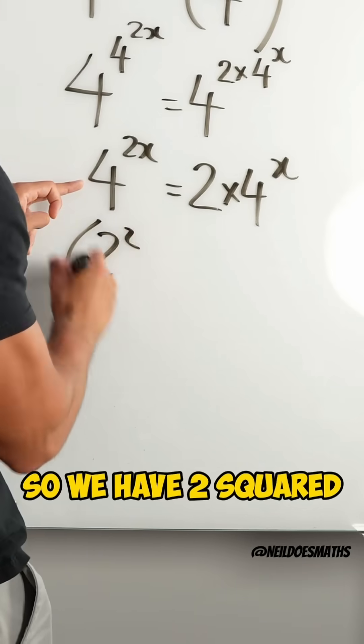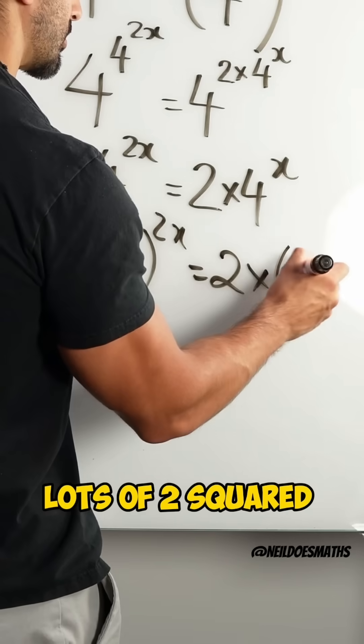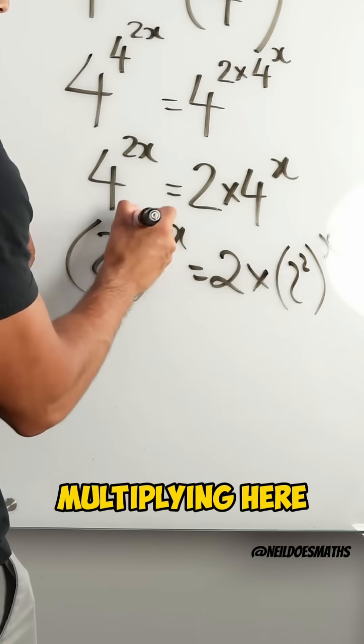Okay, so we have 2 squared to the power of 2x, is 2 lots of 2 squared to the power of x. Remember, we're multiplying here.